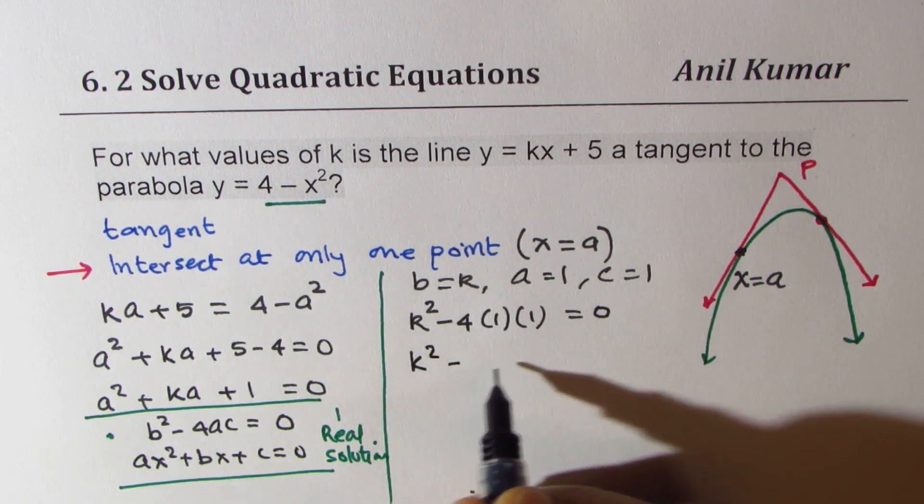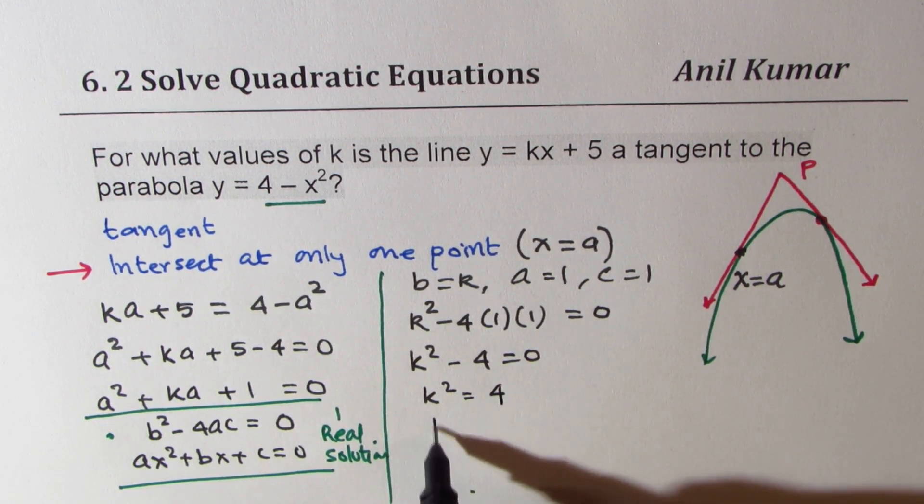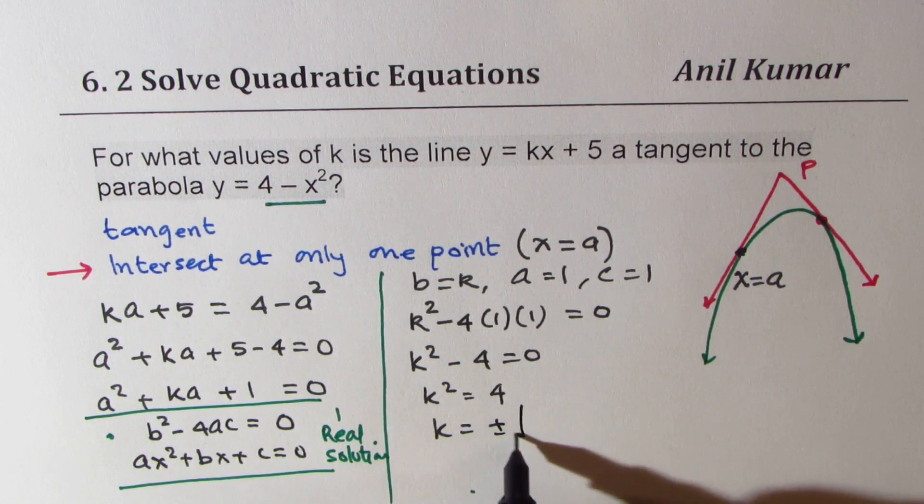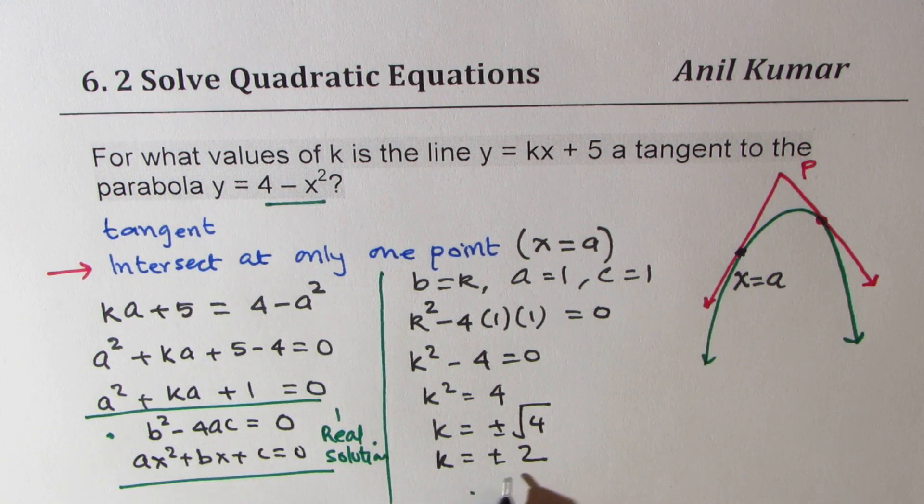So we get k² - 4 = 0 or k² = 4. That gives k as plus minus square root of 4, which is ±2. So we get two values of k, plus and minus 2.